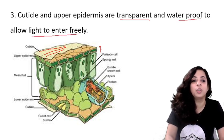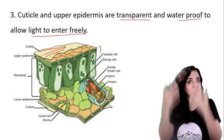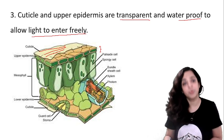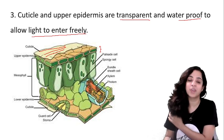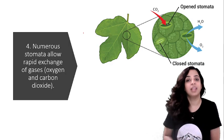So they are transparent and waterproof, which allows the light to enter freely. And we know light is required for the process of photosynthesis. So the third adaptation is cuticle and upper epidermis are transparent and waterproof to allow light to freely enter.